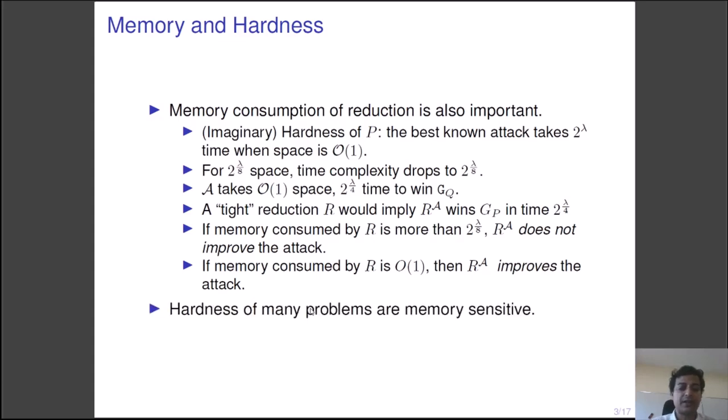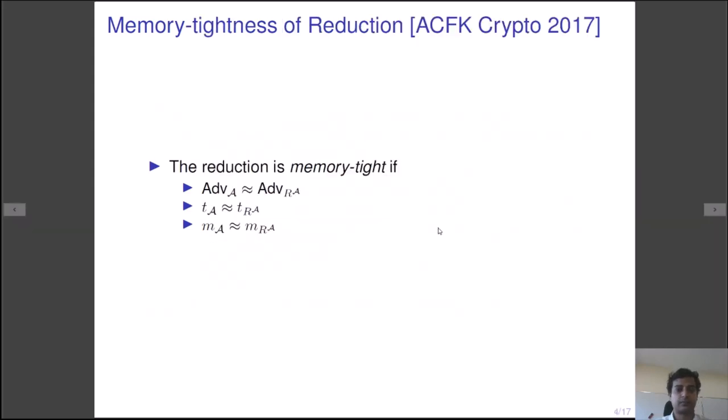The issue is not imaginary. Many hard problems are indeed very memory sensitive. To remedy the situation, Auerbach, Cash, Fischlin and Kiltz in Crypto 2017 introduced the notion of memory tightness. In this case, we have a memory parameter in the reduction as well. We say a reduction is memory tight if, in addition to the same success probability and the same time complexity criteria, the attacker and the reduction must have approximately the same memory as well.